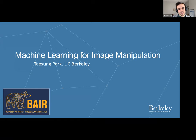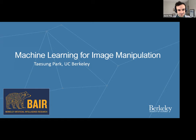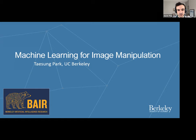Taesung Park from UC Berkeley gives a talk about machine learning for image manipulation. He is a PhD student advised by Professor Alexei Efros, focusing on computer vision and learning-based computational photography. He received his bachelor's and master's at Stanford where he worked with Blaine Colton and Sergey Lepin. Throughout his PhD, he has worked on exciting projects including CycleGAN with more than 5,000 citations and GAUGAN, which received a best paper finalist award at CVPR 2019 and a best show award at SIGGRAPH 2019. He is also the recipient of the Samsung Scholarship and the Adobe Research Fellowship in 2020.